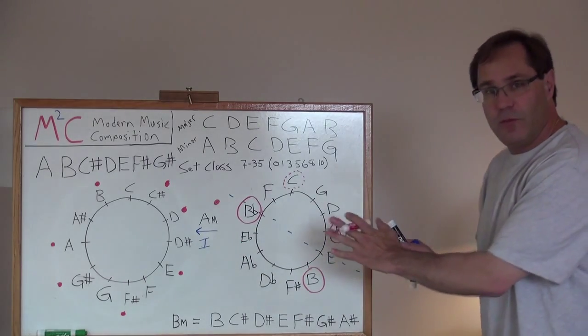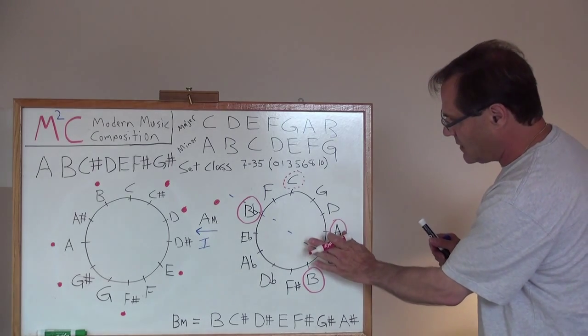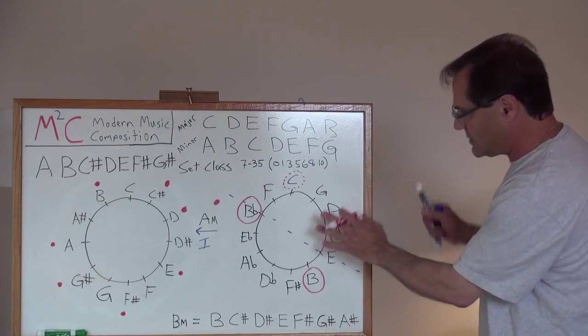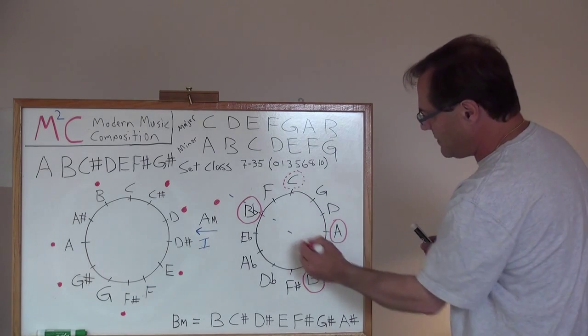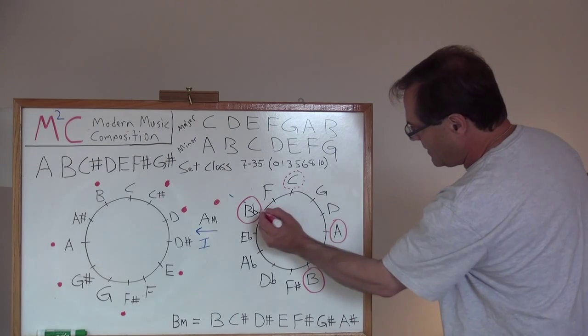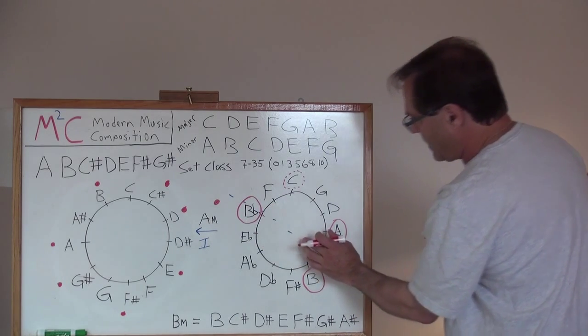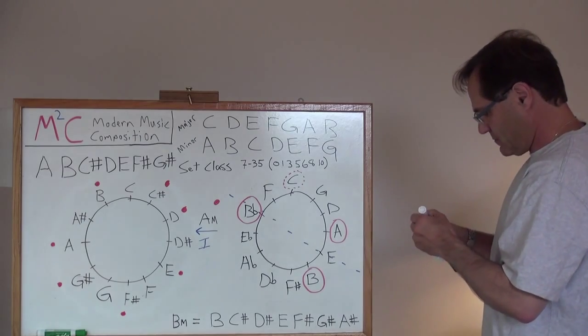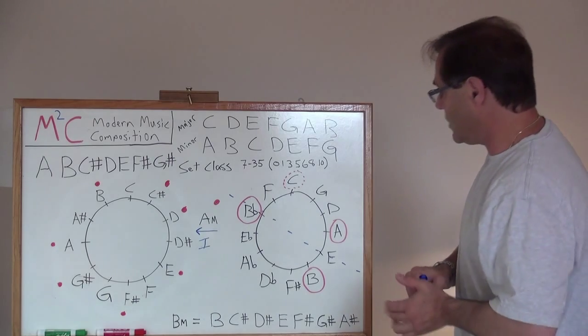Well, now we've got some coolness here with respect to some inversions that we can do just in your mind with respect to now the circle of fifths. Here's some symmetry. We've got B, A and B flat major.